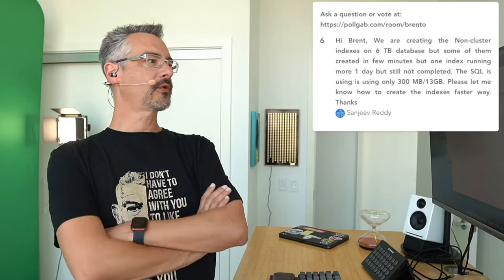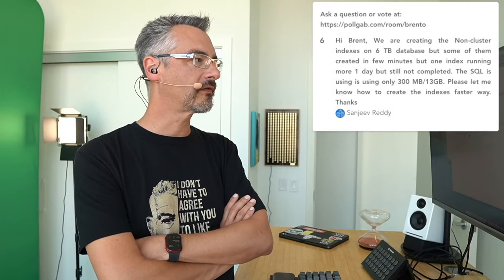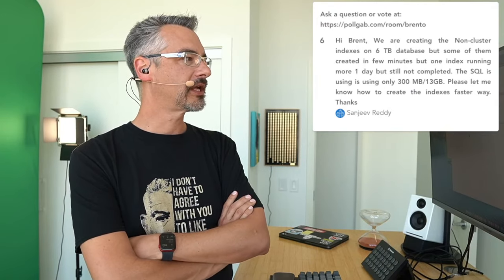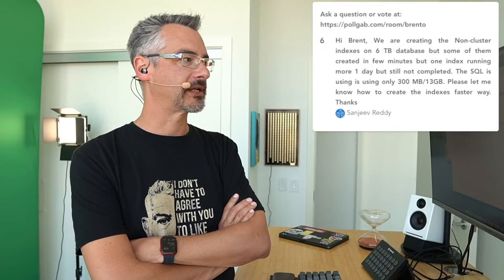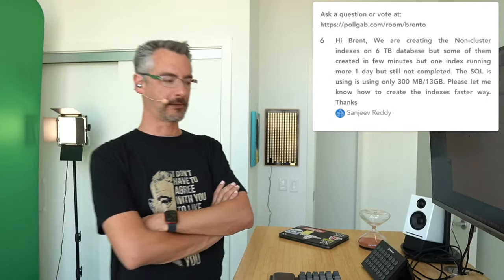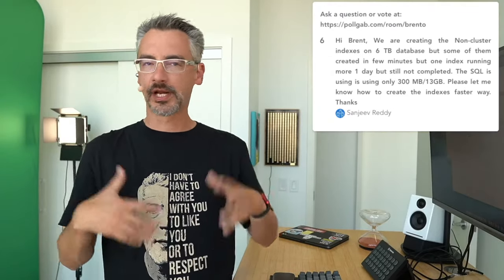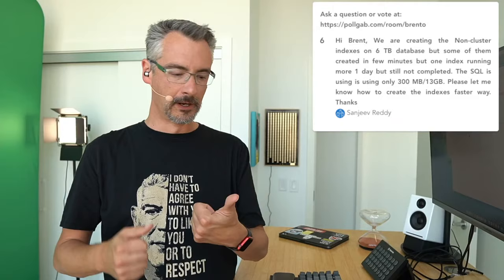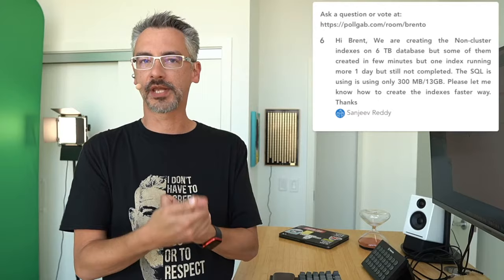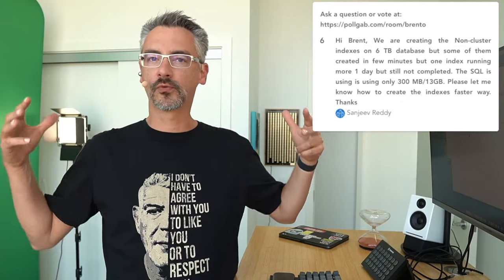Sanjeev asks: we're creating non-clustered indexes on a six-terabyte database, but some of them are created in a few minutes while one has been running for more than a day but still hasn't completed. The SQL is using only 300 megabytes of 13 gigabytes available. Please let me know how to create indexes faster. I'm going to do a brain dump of things to think about. Number one — is blocking involved? Is anybody else trying to run a statement against the same table at the same time?